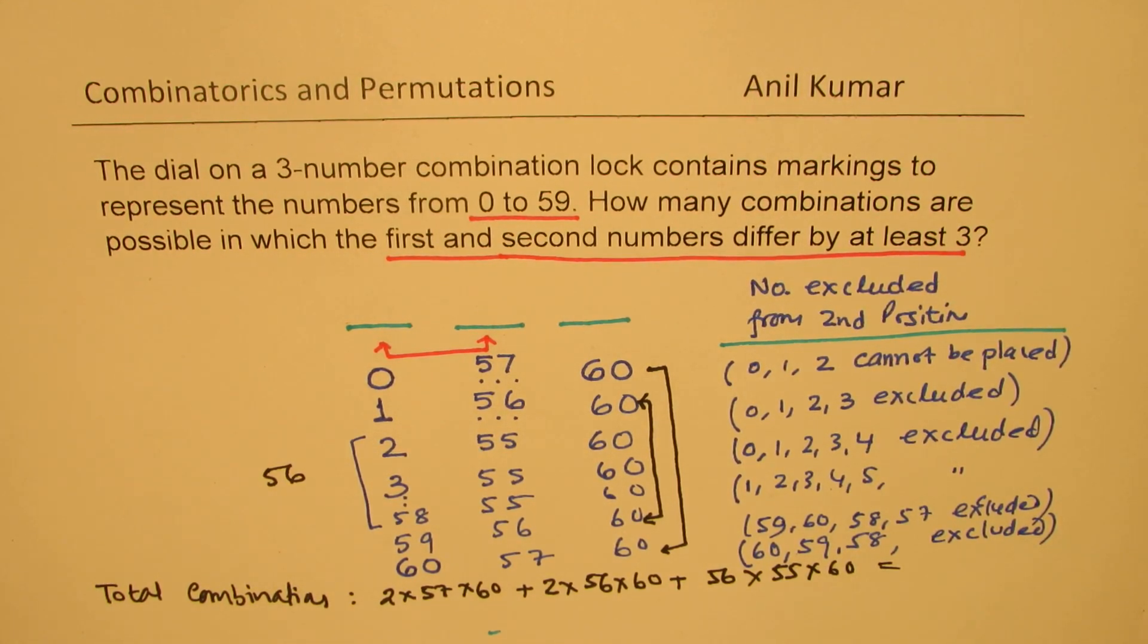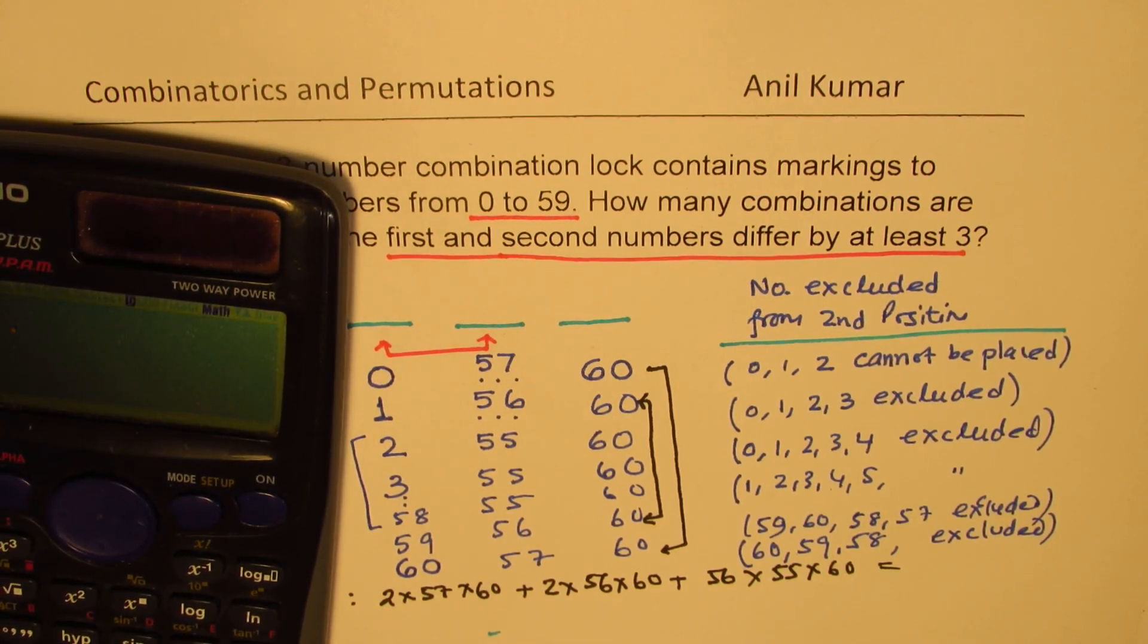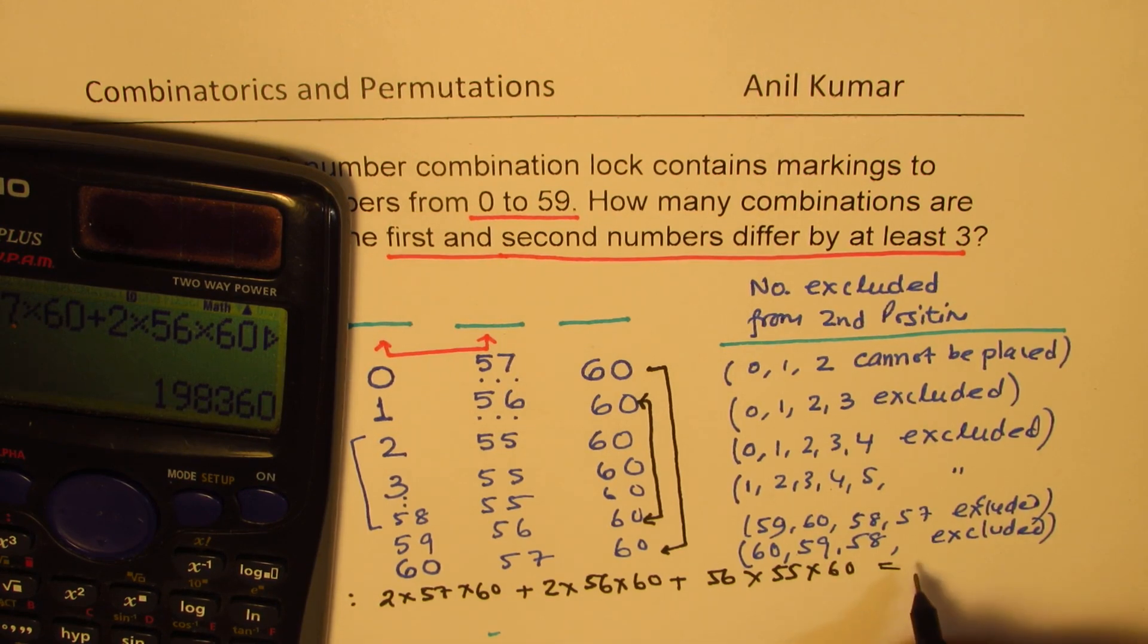Let's calculate this. You could also take 60 common and then multiply these terms. So we have 2 times 57 times 60 plus 2 times 56 times 60 plus 56 times, so we get all 60 combinations times, this time we have 55 times 60. So that gives you the answer which is 198360.